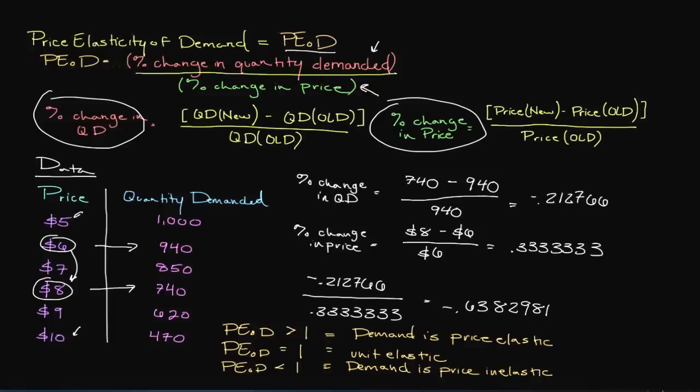So you can see in our example, we have a price elasticity of demand of negative .6382981. And the negative number is insignificant, just so you know. We don't even consider that, at least for price elasticity of demand. But the .6382981 is significant. We know that is less than one. And so for this example,